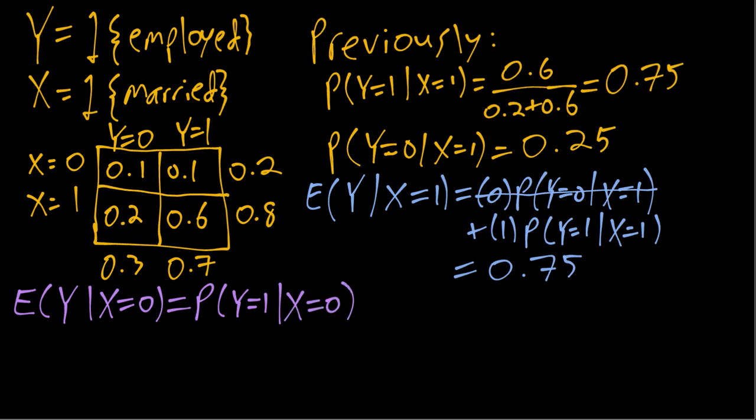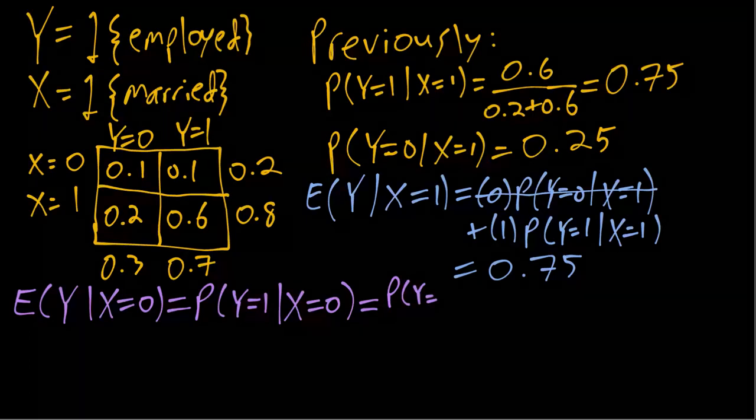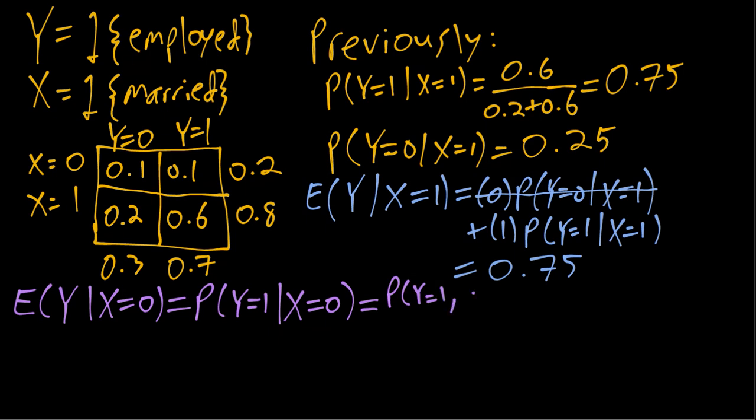To compute that conditional probability, we need a different formula, which is the joint probability divided by the marginal of the conditioning event. So the joint probability is Y equals one and X equals zero, divided by that.